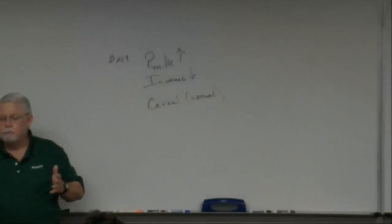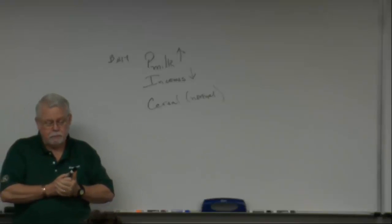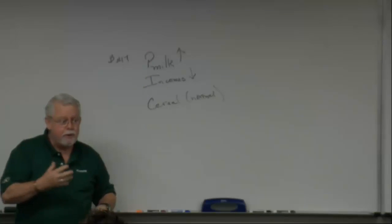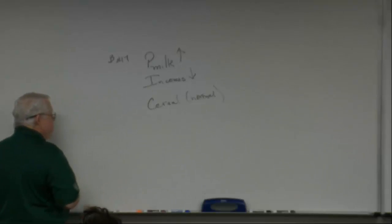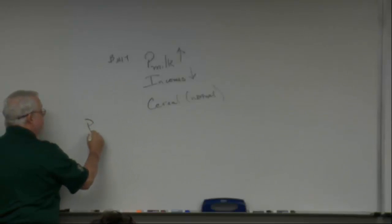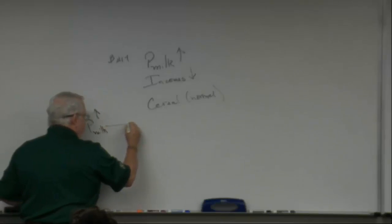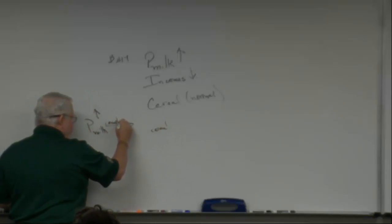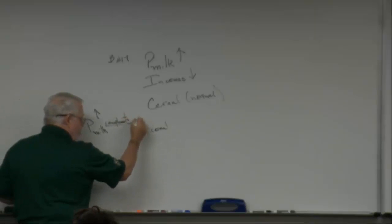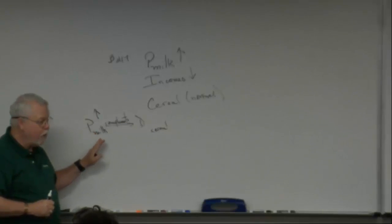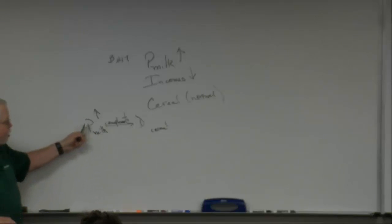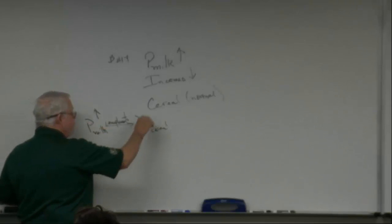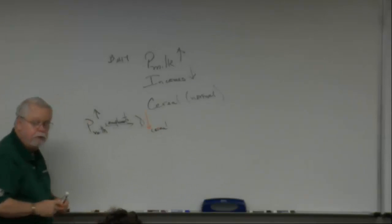What does milk have to do with cereal? They are complements — you buy one, you buy the other. What's the rule for complements? When the price of milk goes up, which curve is affected? The demand curve. Complements has to do with the effect of the price of one good on the demand for another. If milk gets expensive, I can't afford the milk, so I don't need the cereal. The demand for cereal is going to decrease.